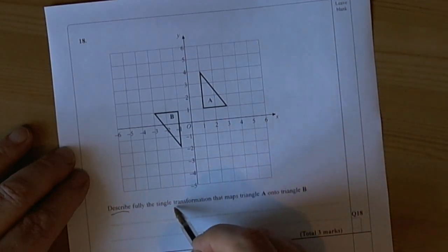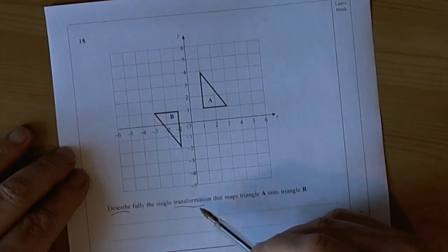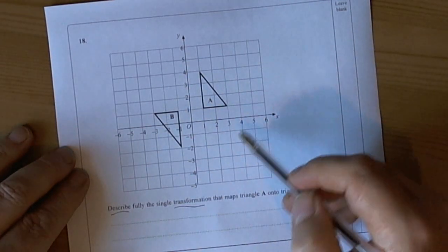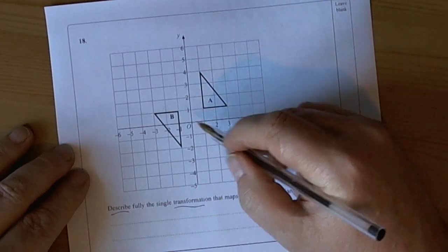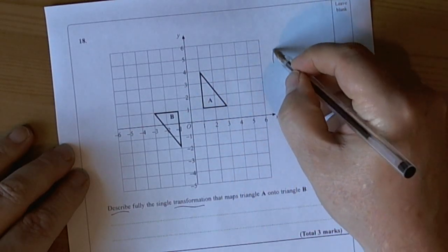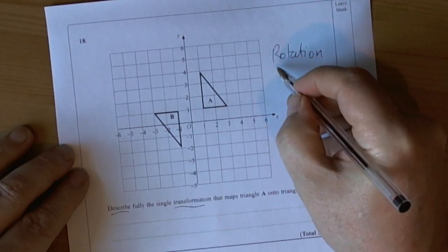These describe fully questions on transformations are quite popular in the exam, so it's worth practicing these well. They're on a square grid, so basically there are only four transformations. When you see this kind of question, always write down the four to remind you that you're going to be using one of these words and its associated terms.